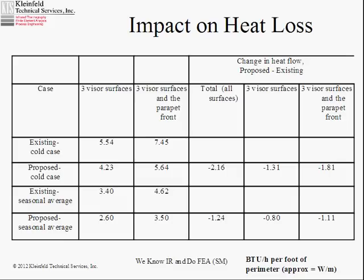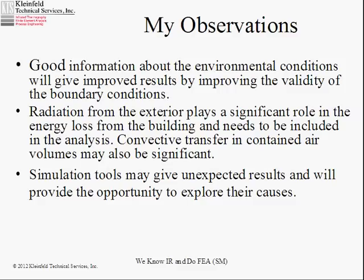The impact on heat loss for the existing design: for the three visor surfaces — top, front, and bottom — drops from 5.54 to 4.23 in the proposed. If we include the front of the parapet, the number goes up but still represents a significant drop. For all surfaces of the entire model, heat loss drops by approximately 2 versus 1.3 or 1.8 for the various surfaces. You don't see as big a loss in the seasonal case because the conditions are milder.